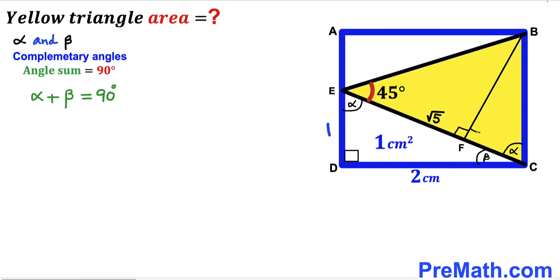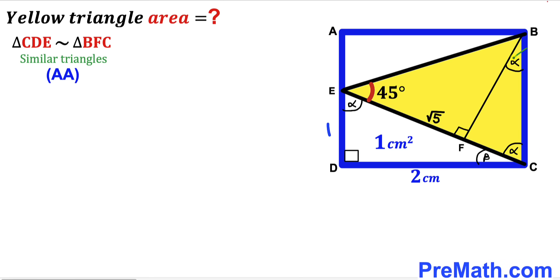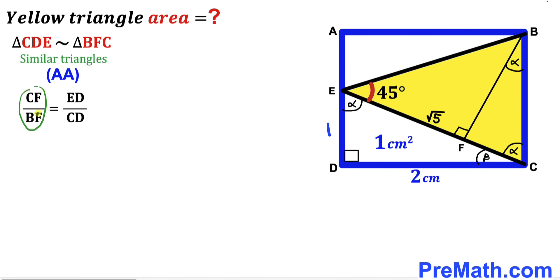Since we have a 90 degree angle in rectangle ABCD, this angle is 90 degrees. So the remaining angle is our angle alpha. We can see that right triangle CDE and right triangle BFC are similar triangles according to the angle-angle similarity theorem. Since these two right triangles are similar, we are going to have a proportion: the ratio of side lengths CF to BF equals the ratio of side lengths ED to CD.